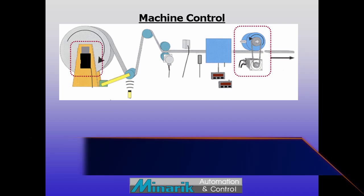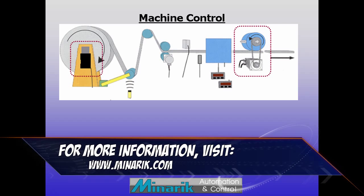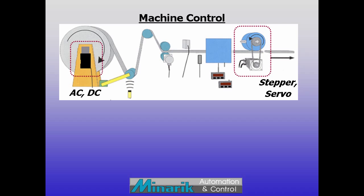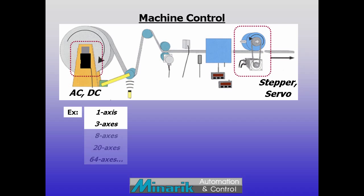When electric motors are added on the machines — whether AC, DC, stepper, or servo — each motor represents an axis of physical movement. The higher the number of motor axes, the more likely the need for complex or coordinated movement or motion control.